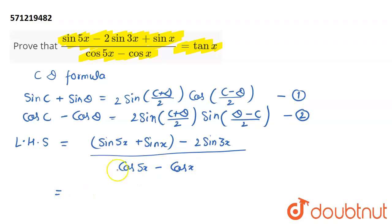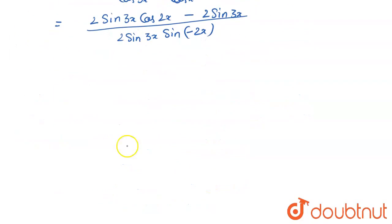Now I am going to use first and second formulas in the next step. I assign C as 5x and D as x in both cases. So it becomes in the numerator sin 5x plus sin x can be written as 2 sin of 5x plus x equals 6x divided by 2 equals 3x, and 5x minus x equals 4x divided by 2 becomes 2x. This term will remain as it is and the denominator becomes twice sin of 5x plus x, 6x divided by 2 is 3x. Pay attention here again: x minus 5x is minus 4x divided by 2 is minus 2x.